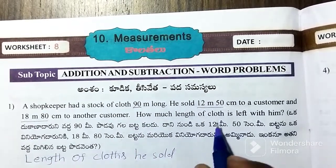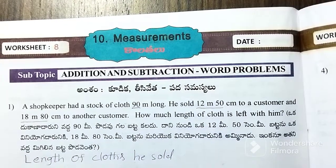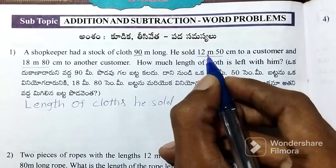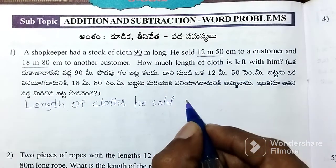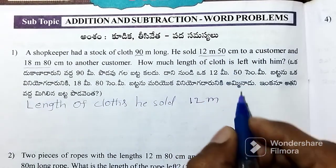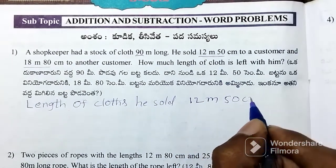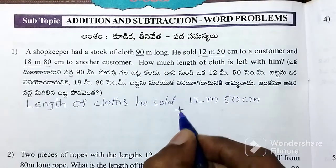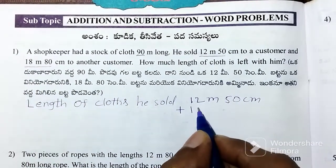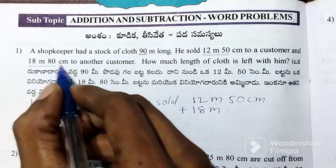Let's take the length of cloth. We add: 12 meters, 50 centimeters, plus 18 meters, 80 centimeters.